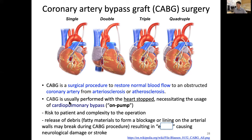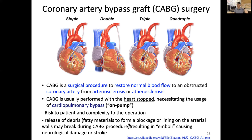CABG is usually performed with the heart stopped, necessitating cardiopulmonary bypass — this is called on-pump. However, stopping the heart poses risk and complexity. There is potential for release of fatty debris to form blockages, and lining on the arterial wall may break during the CABG procedure, especially when connecting to the aortic wall. This results in traveling clots called emboli, which, if they reach the brain, can cause neurological damage from stroke — giving patients a higher risk of stroke and memory issues.